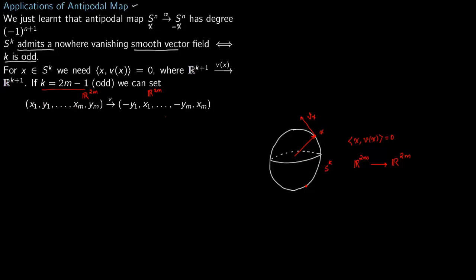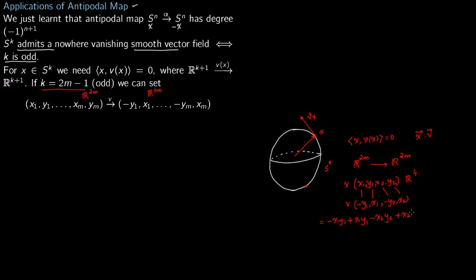For example, say x equals (x1, y1, x2, y2) in R^4, and the vector field takes this to (minus y1, x1, minus y2, x2). Computing the dot product x dot V gives minus x1*y1 plus x1*y1 minus x2*y2 plus x2*y2, which equals zero. So if k is odd you can construct a nowhere vanishing vector field like this.